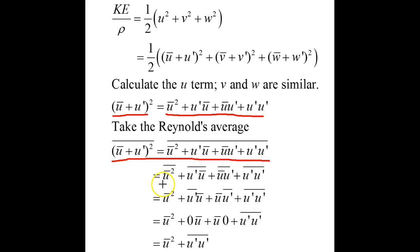Average values of average values are just average values. Because an average value is a constant, we get two terms of a constant times the average of a third term, which is just zero. When we are done, we see that we have two terms left: the average u squared, and the perturbation term squared.